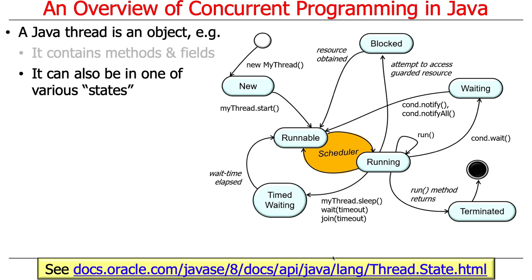A thread object in Java can be in various states — one state at a time — and it transitions between those states. We'll go through them in detail later when we cover threading internals. But in a nutshell: when you make a new thread it goes to the new state; when you start the thread it becomes potentially runnable; when the OS scheduler and VM scheduler decide to run it, it becomes running. As it runs it can transfer into waiting, blocked, or timed-waiting states and back to runnable. When the thread terminates, it returns from the run method and it's finished its computation.